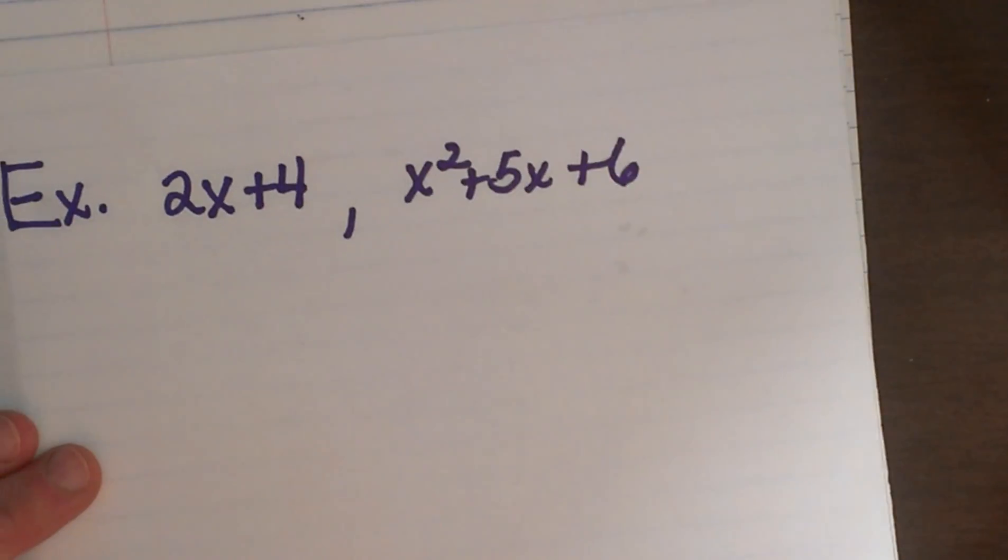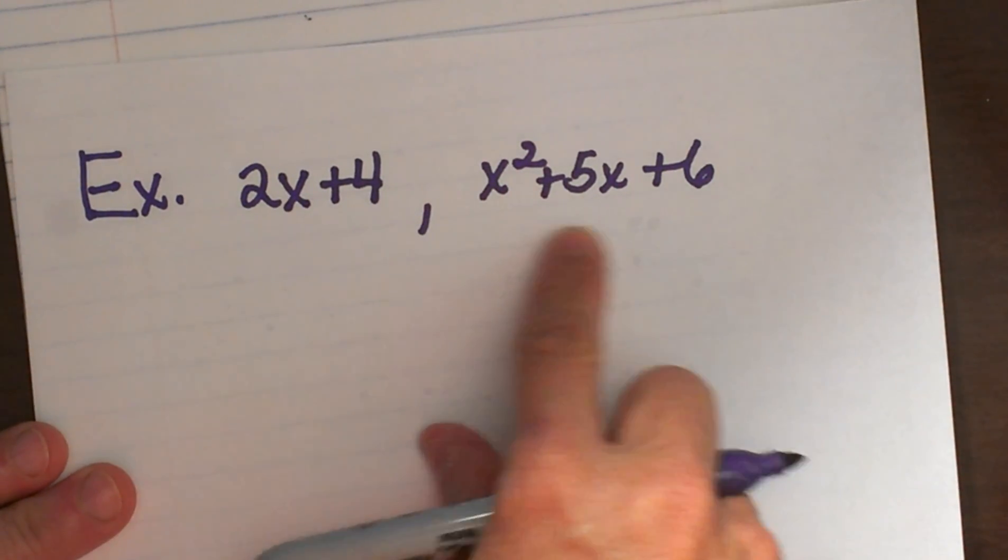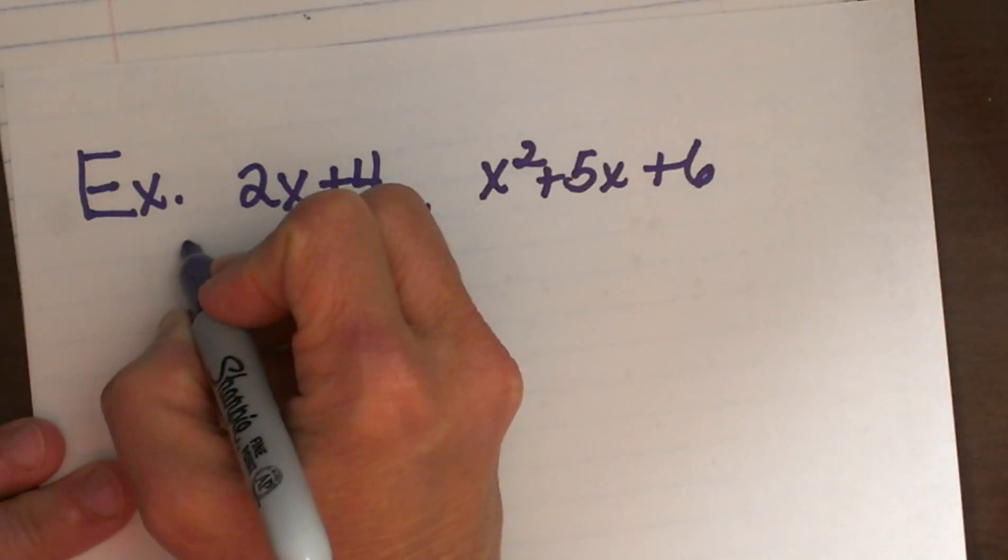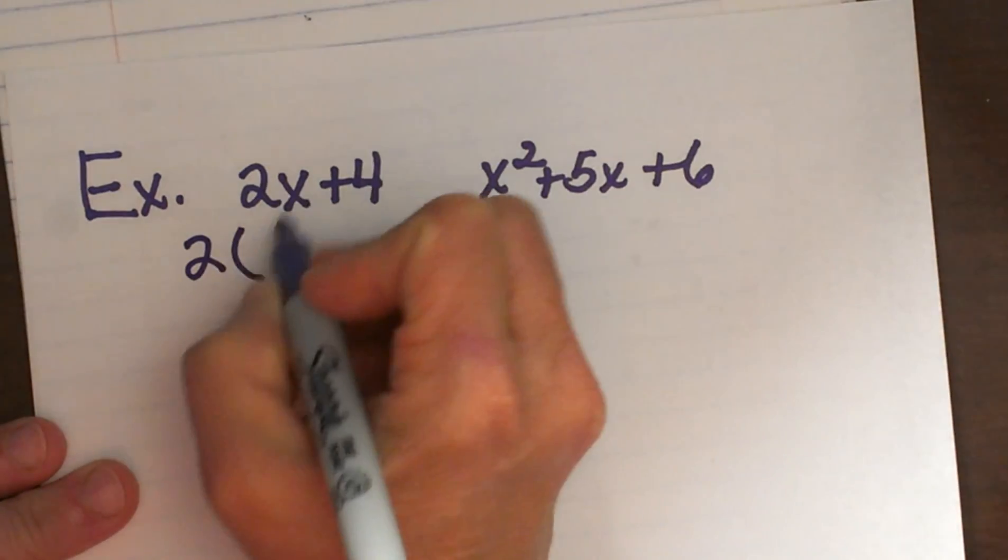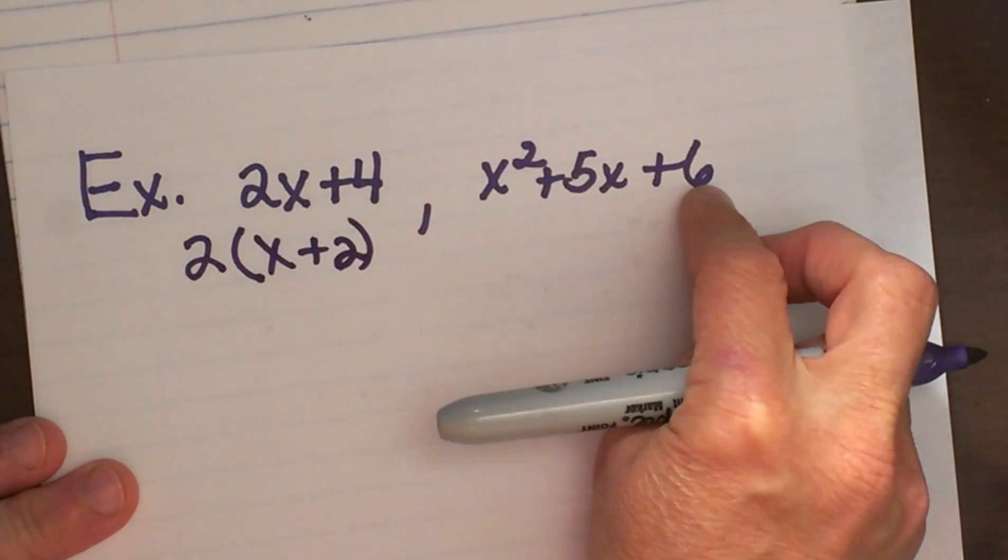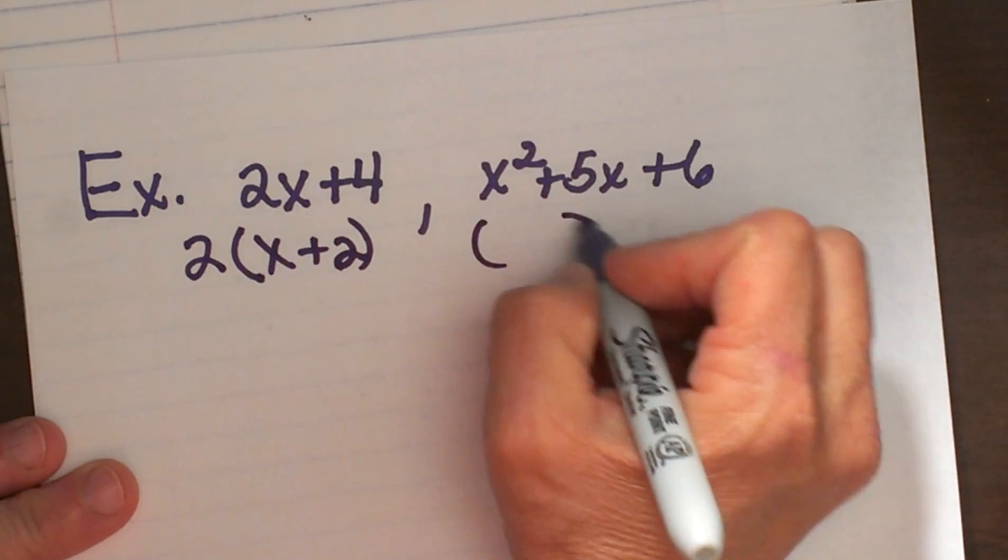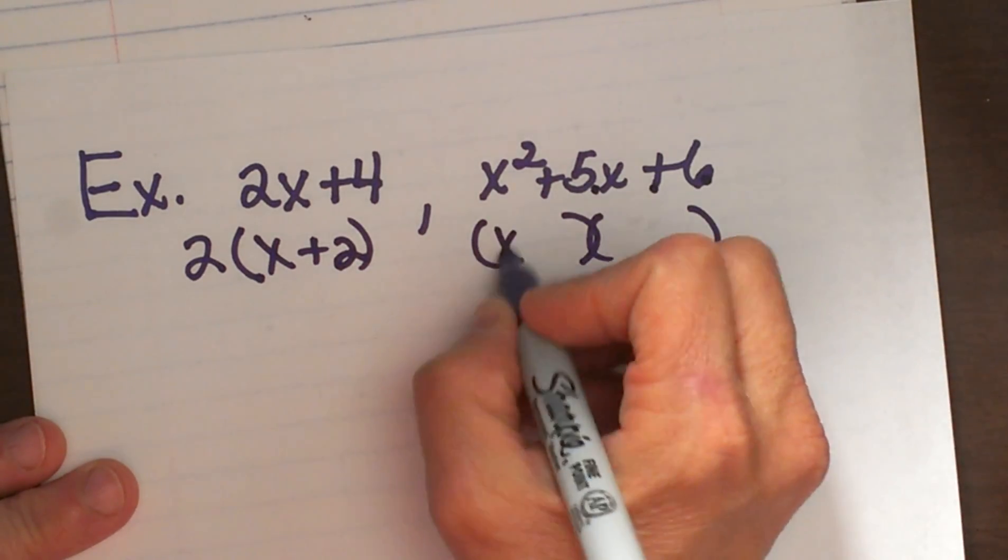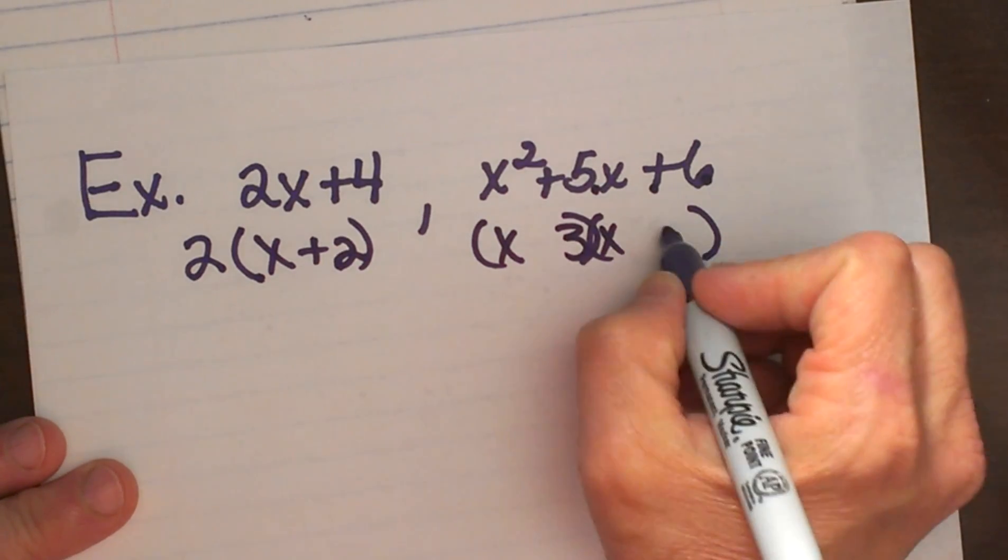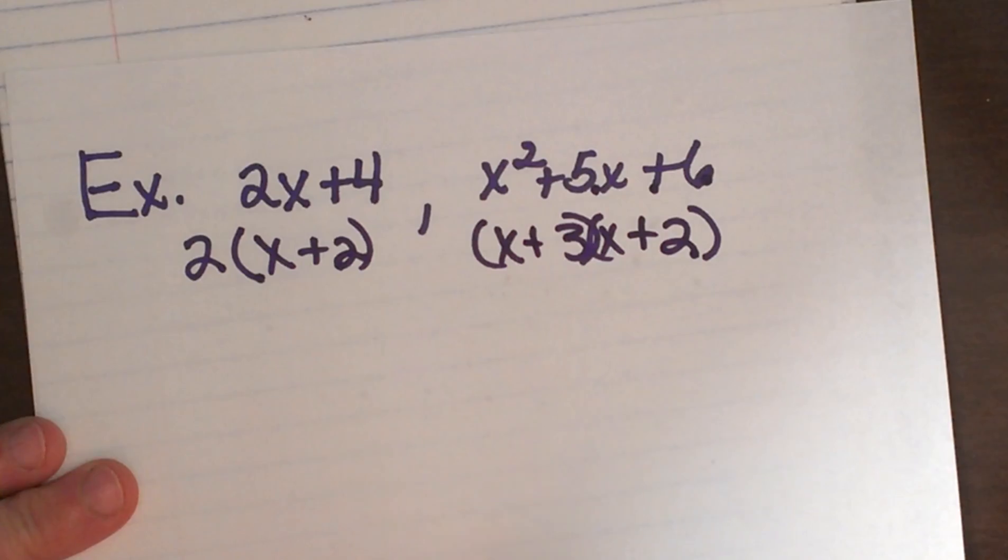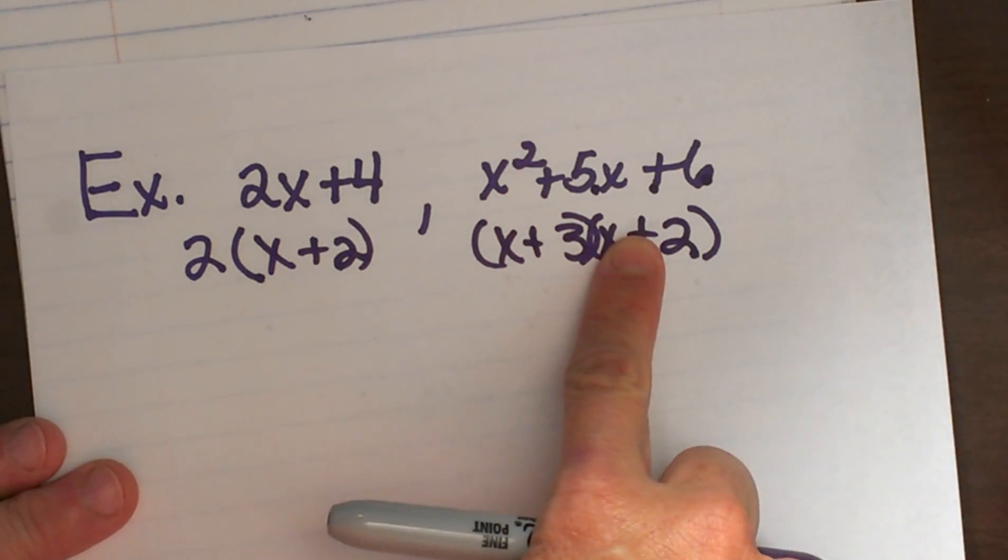Let's look at a couple more of these because they get a little fancier. Here is one with a binomial and a trinomial. So what is the first thing we do? We factor. So let's factor these. So I am going to take out a 2 and I am going to have x plus 2 and then I am going to factor x squared plus 5x plus 6 and this factors into 2 binomials. What multiplies to 6 but adds to 5? Well we know 3 times 2, they are the same sign, they are both positive so it is going to be x plus 3 and x plus 2. So I have just factored my trinomial.